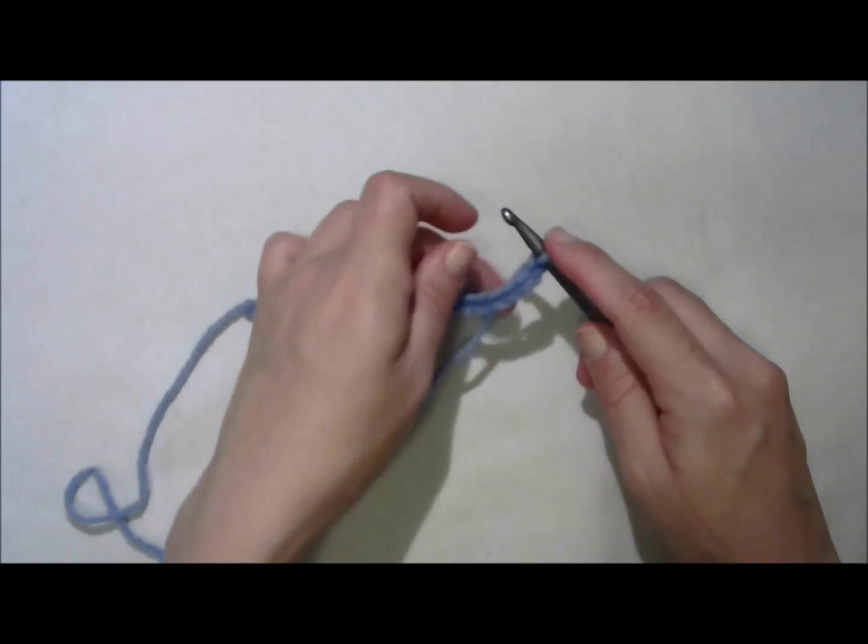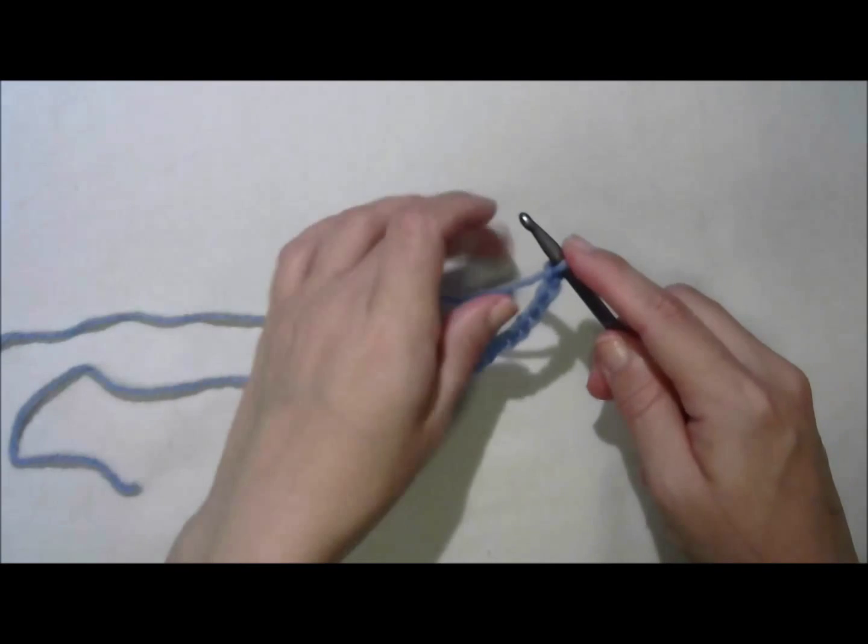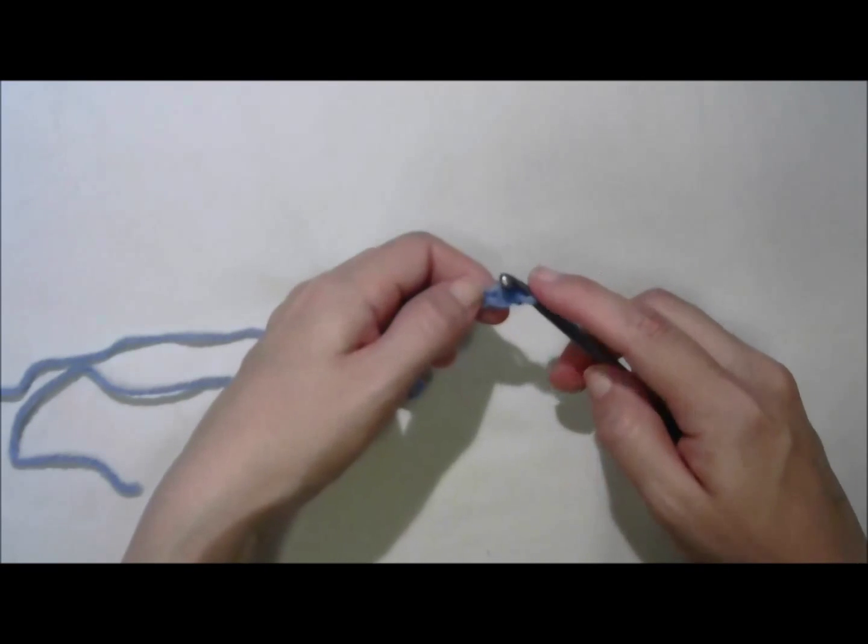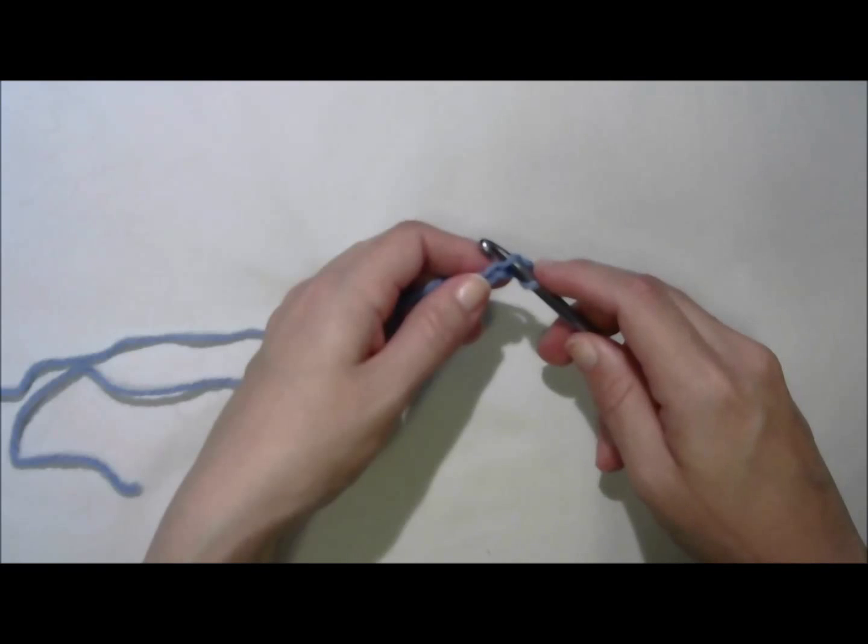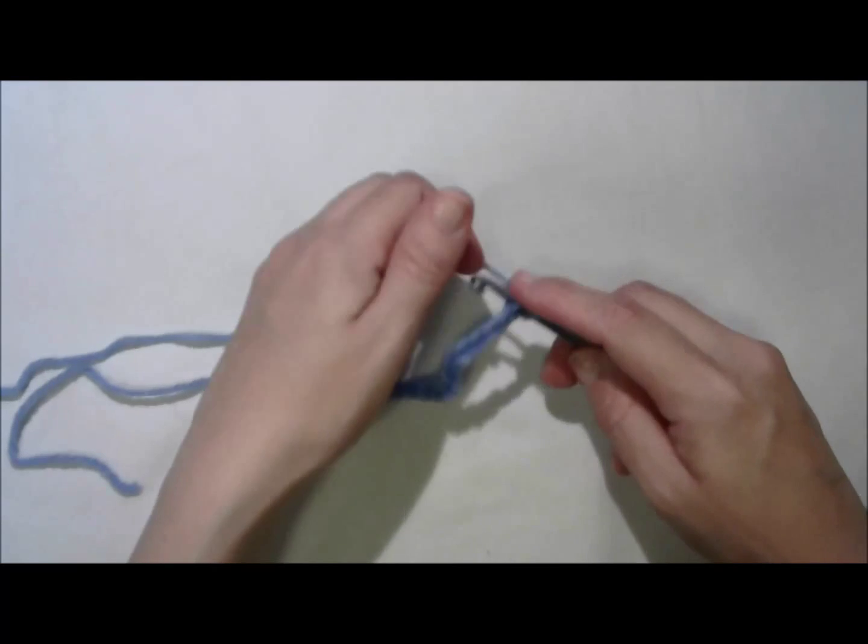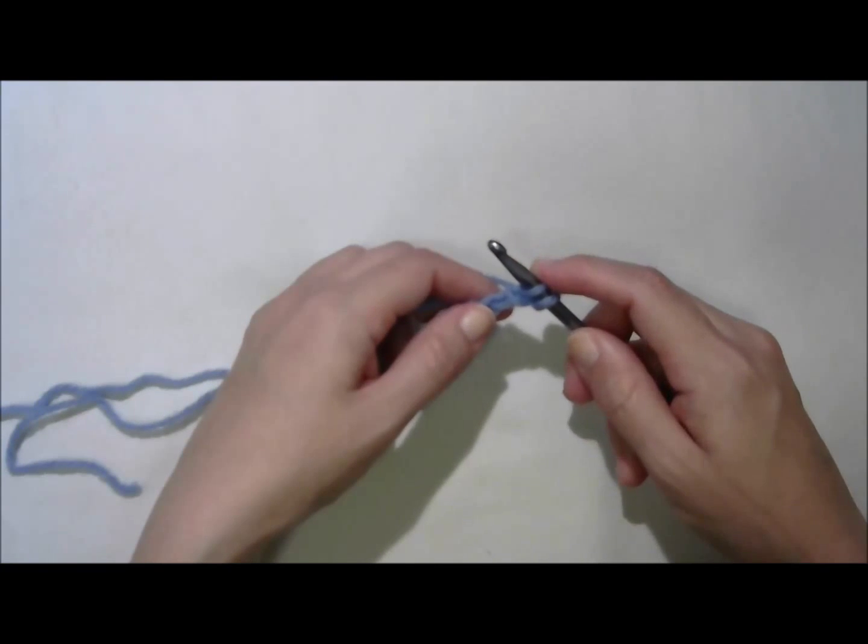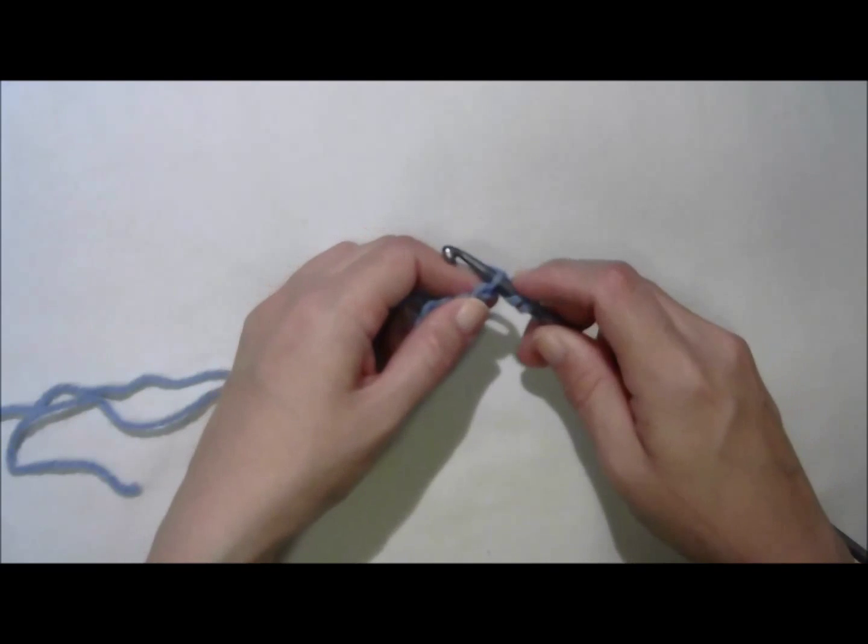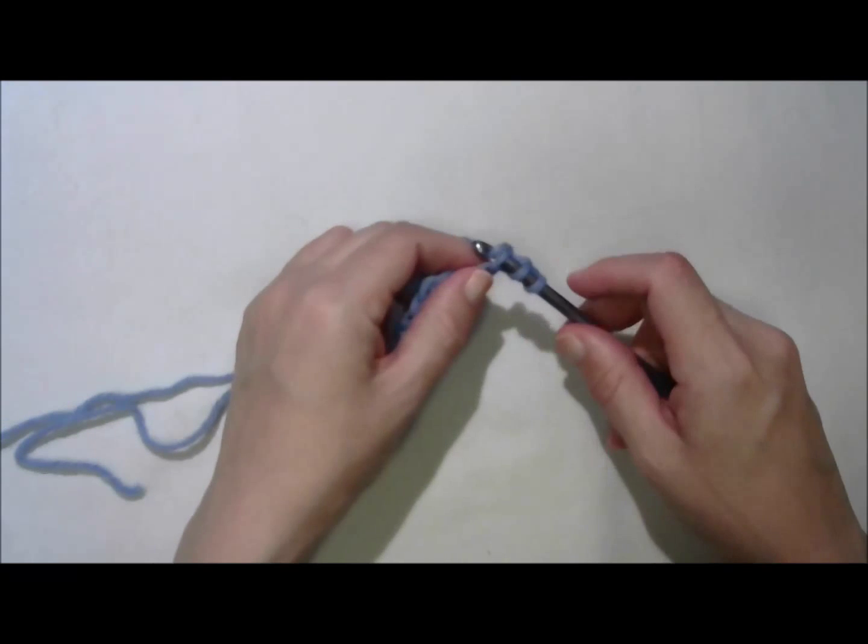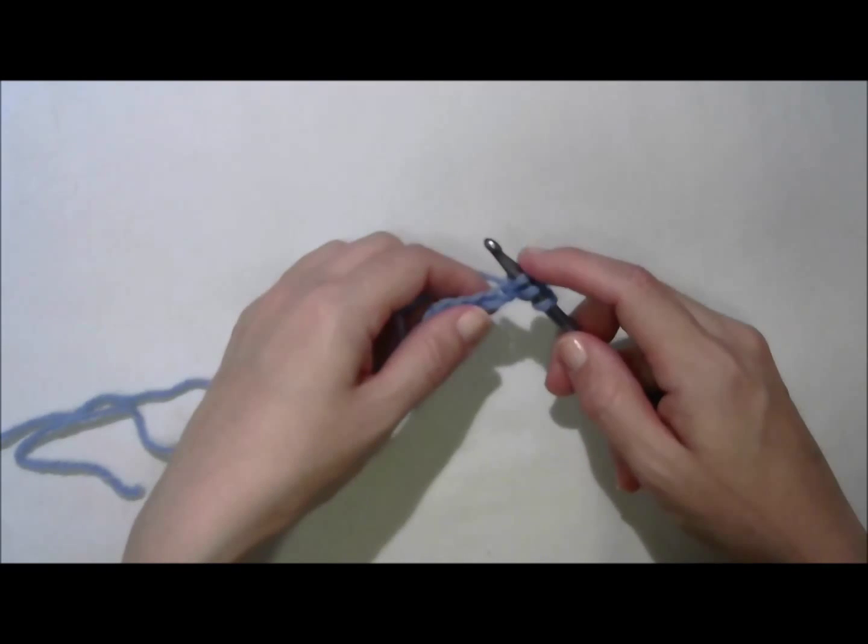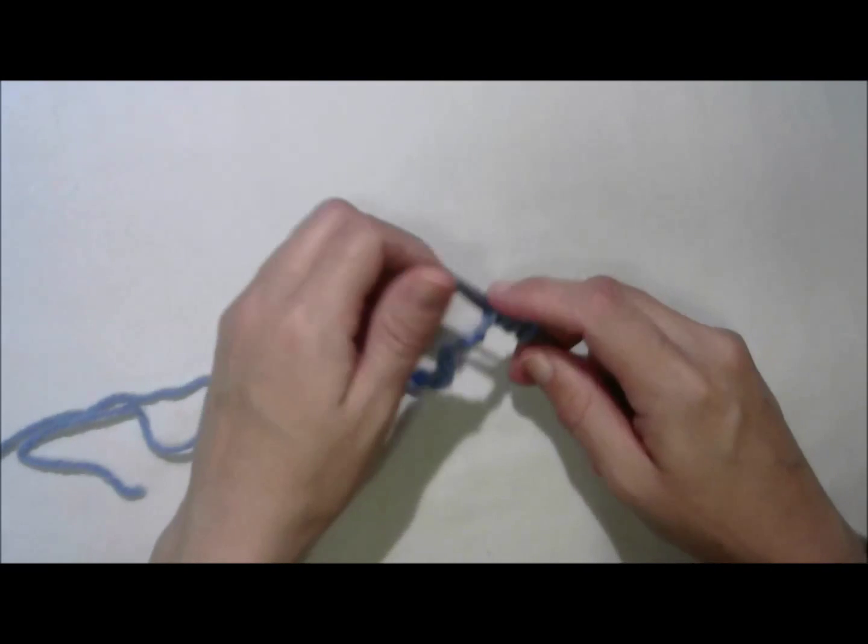Notice I start with one loop on my hook. Go in through the first chain, yarn over, draw up a loop, two. Go into the next chain, yarn over, draw up a loop, and leave it. Yarn over, draw up a loop.